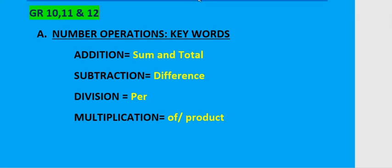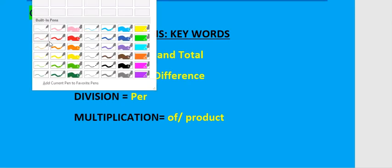For multiplication, the words 'of' and sometimes 'product' are used. The product of two numbers means that you need to multiply those two numbers.